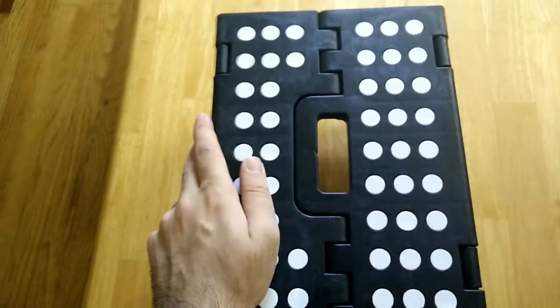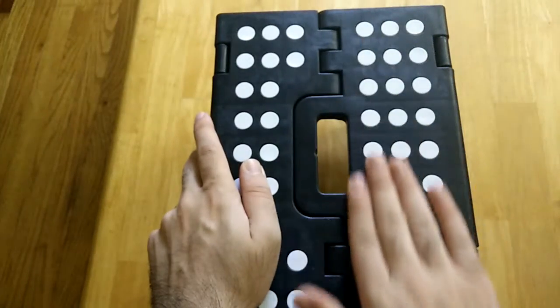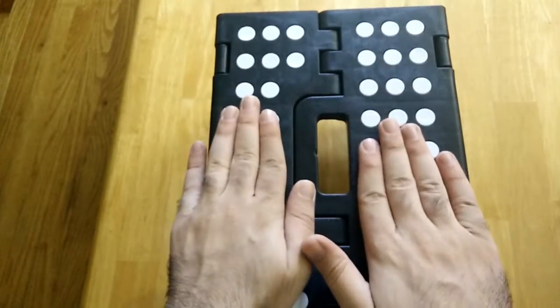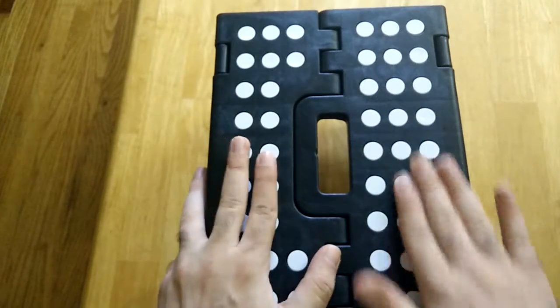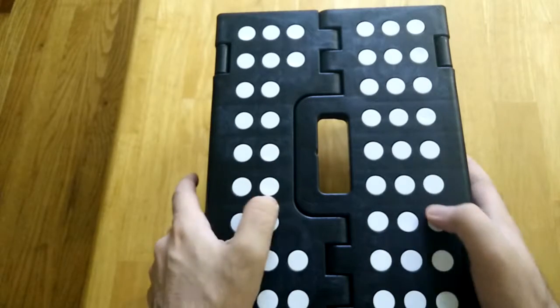There are anti-skid rubber dots on the top that provide a level of grip when you're standing on it. This helps make sure that you don't slip off the stool.